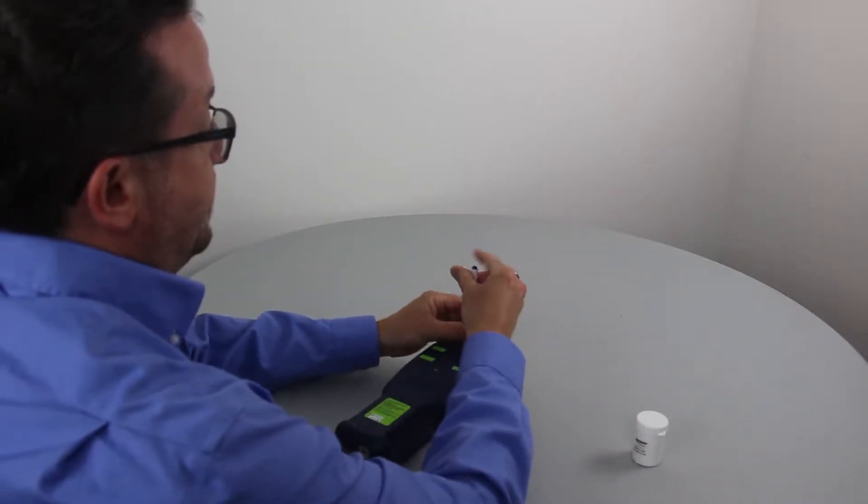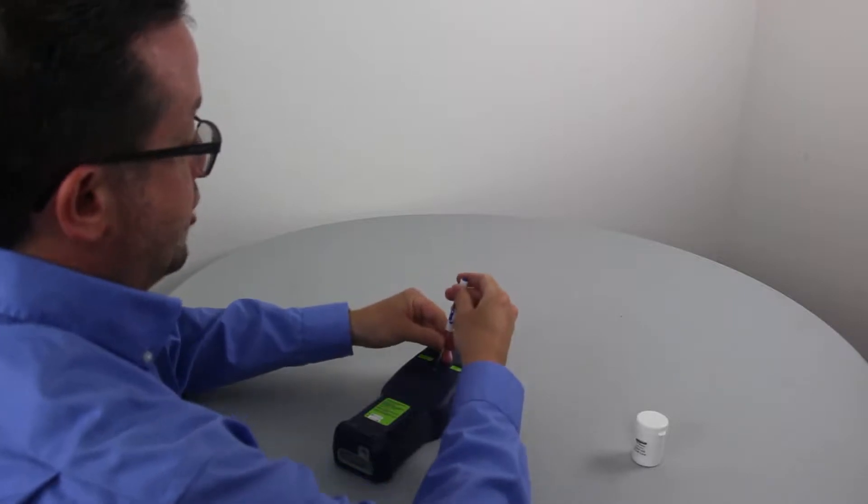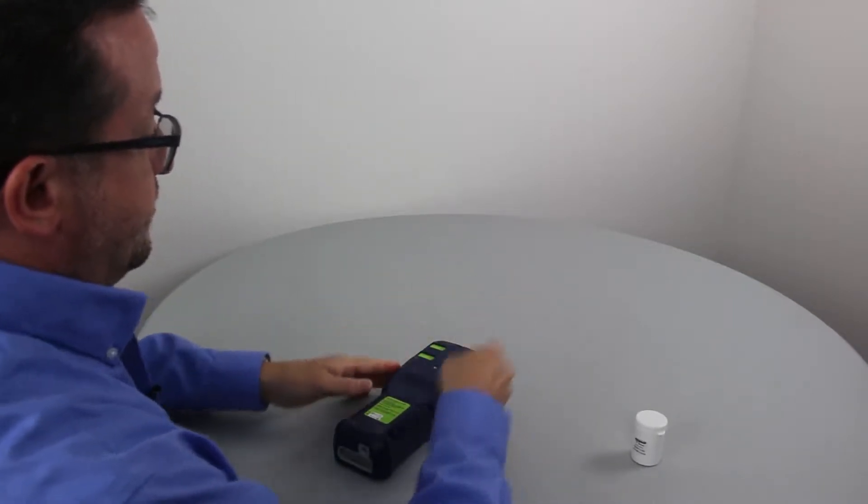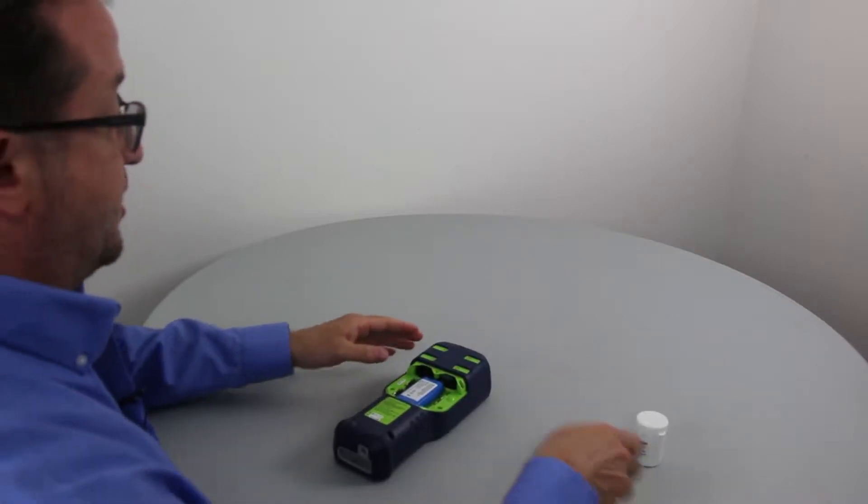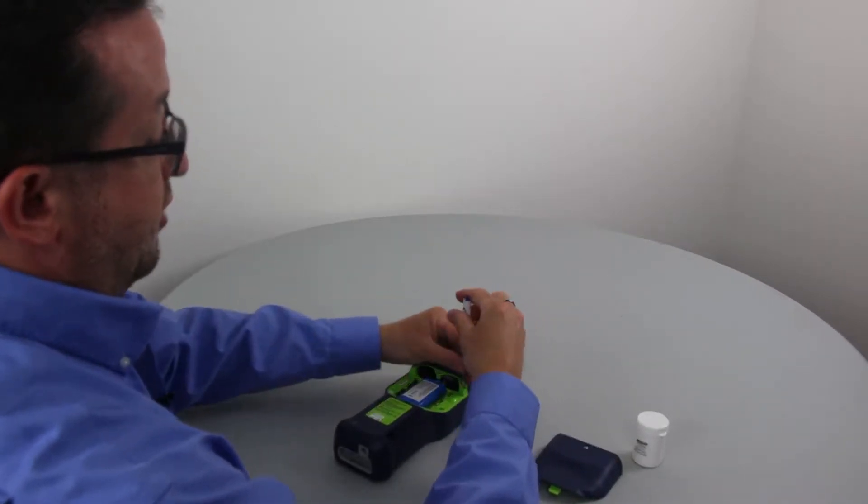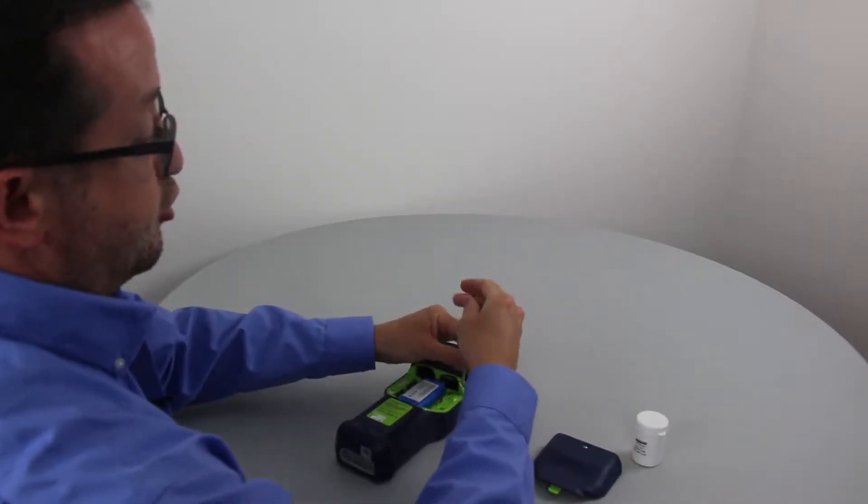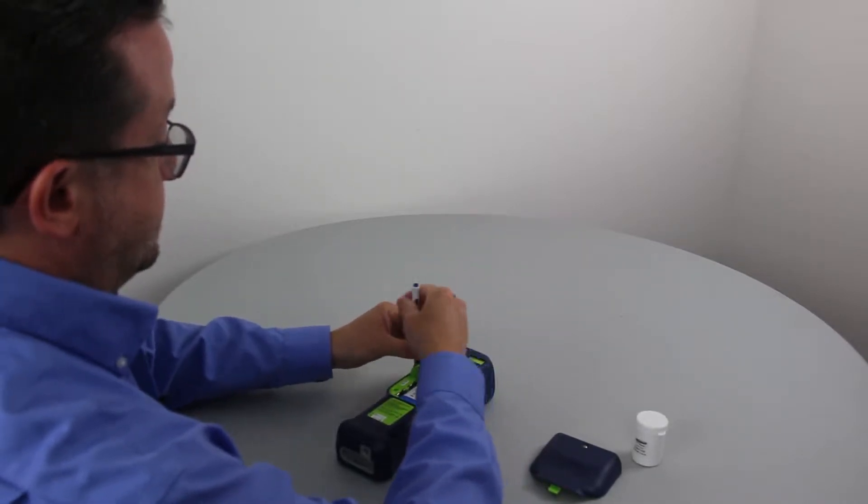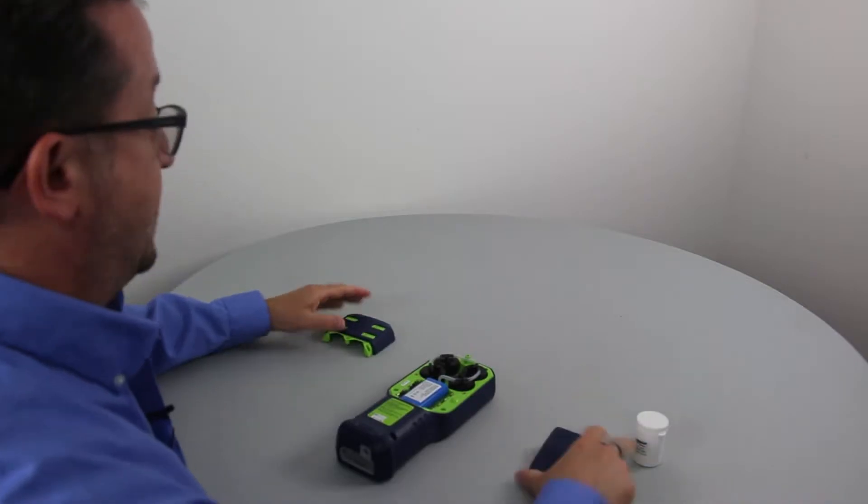With your screwdriver, remove the Phillips head screws on the back cover. Remove the battery compartment cover. Loosen the other two screws to gain access to the sensor compartment. Set that aside.